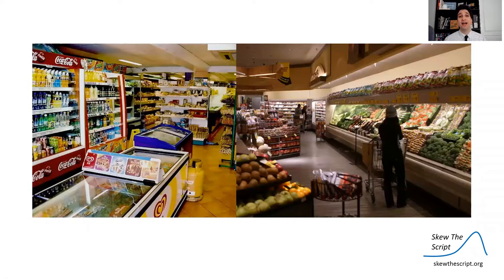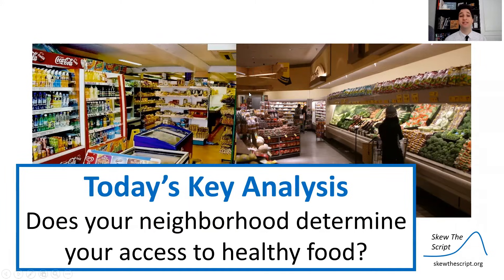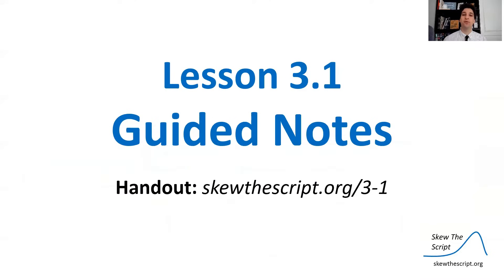Today we're going to be looking at how food access might differ per neighborhood and per income level. Specifically, our key analysis is going to be: does your neighborhood determine your access to healthy foods? We've been to corner stores and supermarkets in different parts of town, and you may notice that stores often offer different things. We're going to look at what are the predictors of those things through our statistical analysis. This is Lesson 3.1 — we're going to start with the guided notes. If you want to follow along using a handout, go to the website linked here.